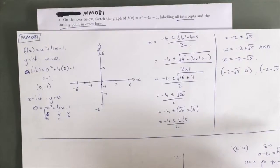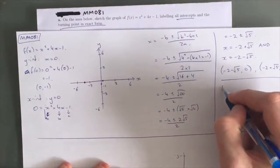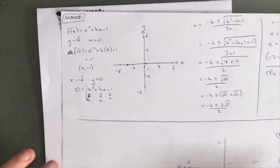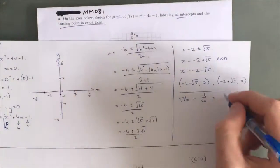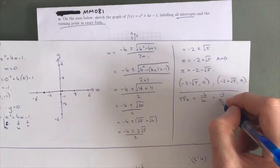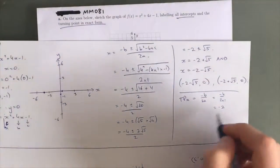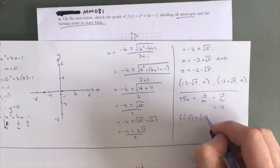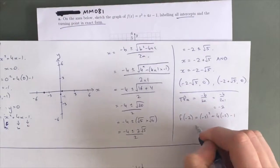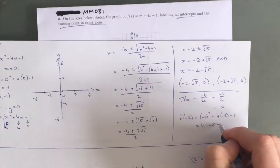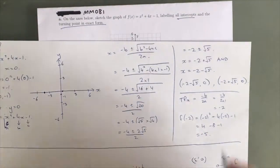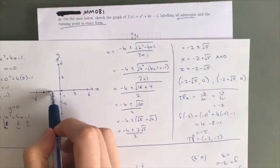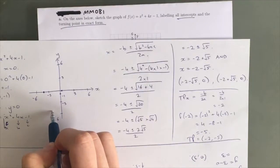To find the turning point, the x-value is equal to negative b over 2a, which equals negative 4 over 2 times 1, which equals negative 2. Then we sub that back into the original equation: f of negative 2 equals negative 2 squared plus 4 times negative 2 take 1, which is 4 take 8 take 1, which is negative 5. So our turning point is at (-2, -5).